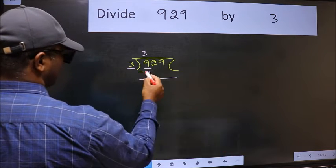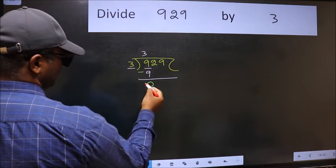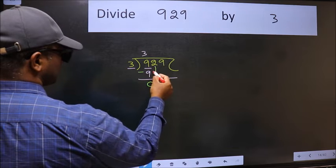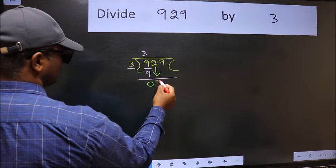Now we should subtract. We get 0. After this, bring down the beside number. So, 2 down.